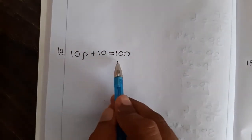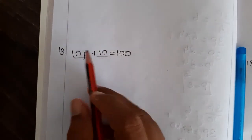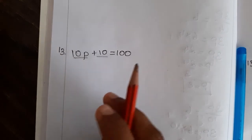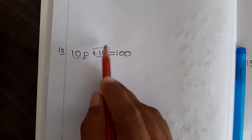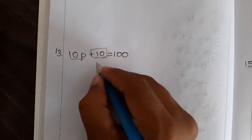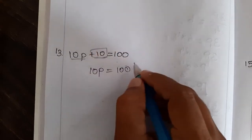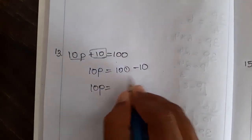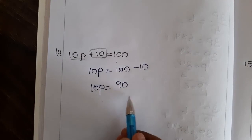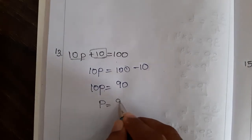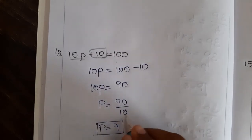Next problem: 10p plus 10 is equal to 100. You can see two terms — the first term is with variable p and the second term is without variable. We have to transpose the term which is only the number. Plus 10 is the only number that we have to transpose. If you transpose, it will become minus 10. 10p will remain in the same side, 100 is also in the same side. So 10p is equal to 100 minus 10, which is 90. Now 10 is multiplied, so we divide: p is equal to 90 by 10, which is 9.